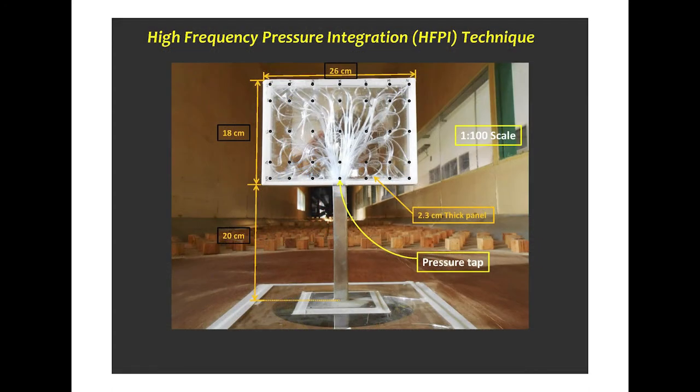Here is an example of wind tunnel testing. You can see a small model of a billboard — a reduced scale model at 1 to 100 scale, so the model is about 40 centimeters but represents a real structure 40 meters high. We drill many holes in the front and back panels and connect them with pressure tubes, which are all connected to pressure sensors located below the wind tunnel. This allows us to measure wind pressure at the front and back simultaneously at many locations.